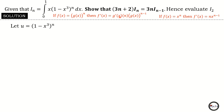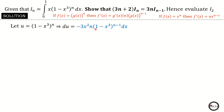So du equals: I differentiate the interior g(x) and get negative 3x squared; then I drop down the power n and raise the function to n minus one. So du equals negative 3x squared times n times (1 minus x cubed) raised to the power n minus one dx. The remaining part of the integral becomes my dv, which is x dx. Integrating dv gives v, and integrating x dx gives x squared divided by two.